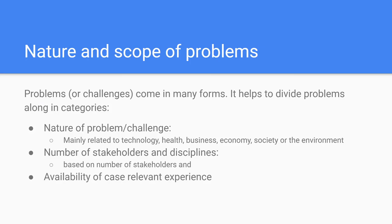When you want to categorize problems, you can start by looking at the nature of problems, like technological problems, societal problems, environmental problems, and so on. You can imagine that you approach a technical problem in a different manner than a societal problem. But still, that's just the nature of problems.